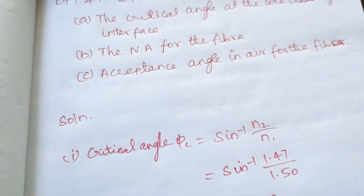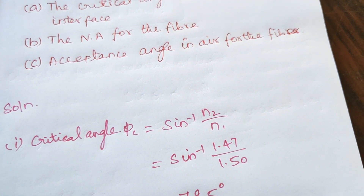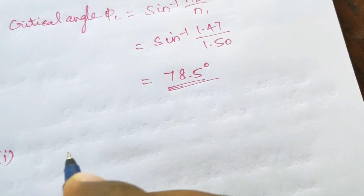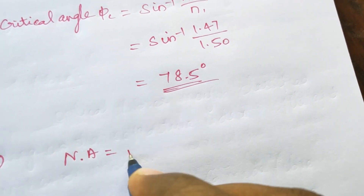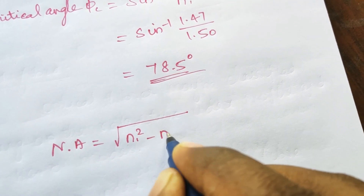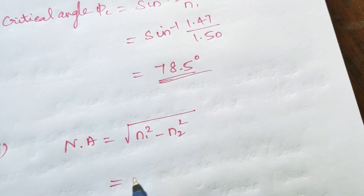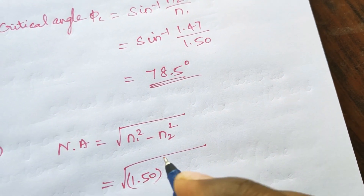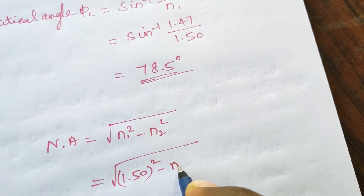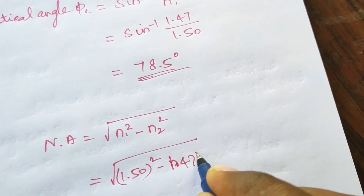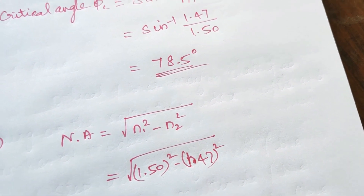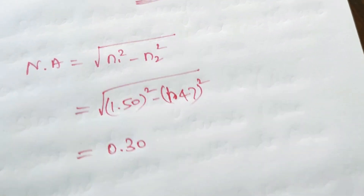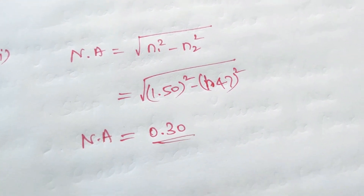Second, we find the numerical aperture (NA) for the fiber. The equation is: NA equals square root of N1 squared minus N2 squared. So square root of 1.50 squared minus 1.47 squared. The numerical aperture is 0.30.